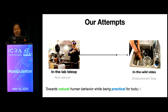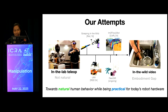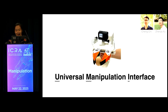So instead, what we are trying to do is study all the options in between, moving towards natural human behavior while still making the system practical for today's robot hardware. One example of our earlier work is called Universal Manipulation Interface — we like to call it UMI.